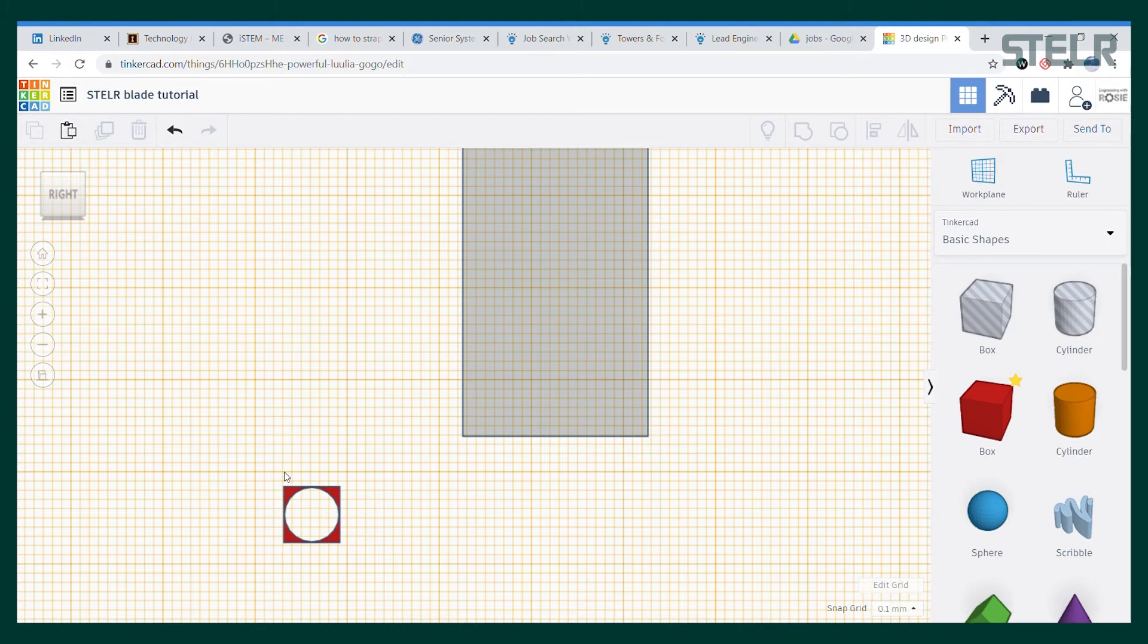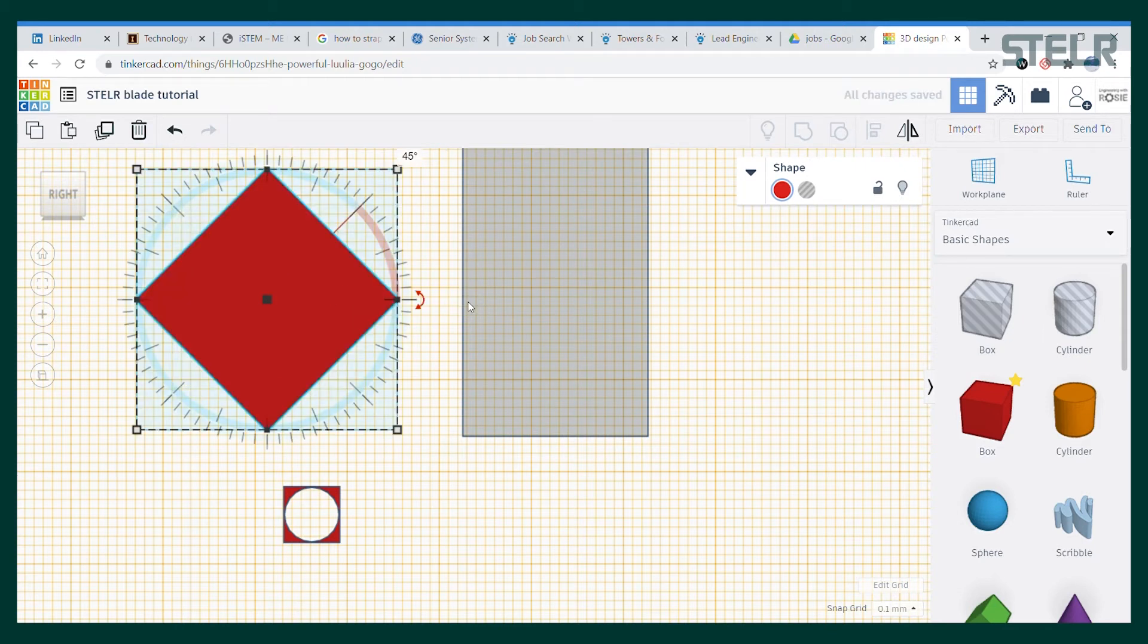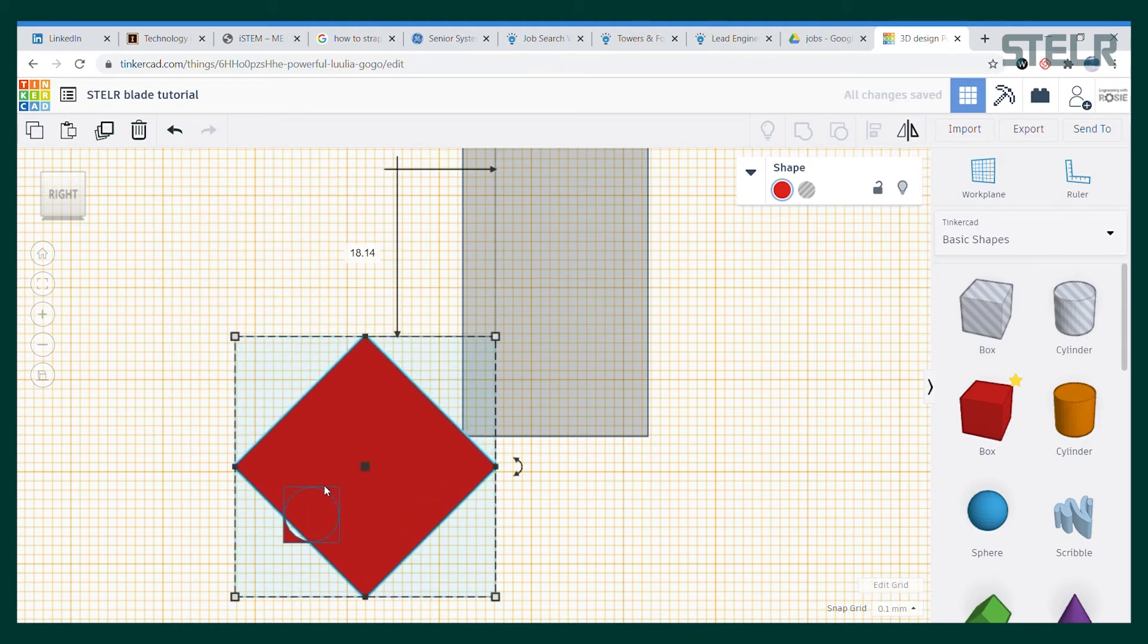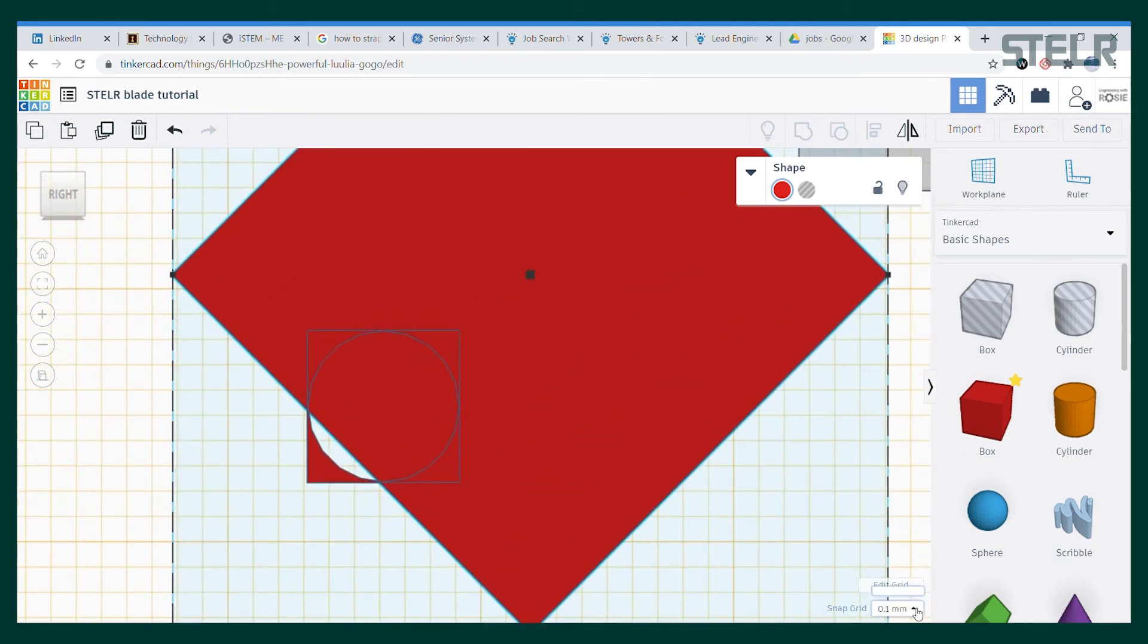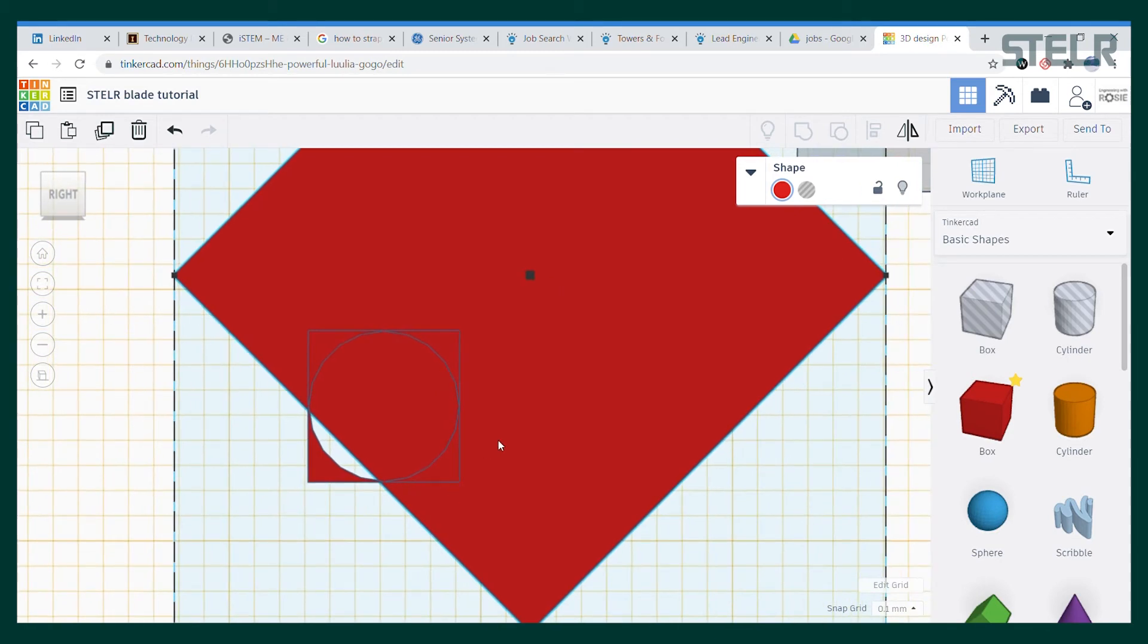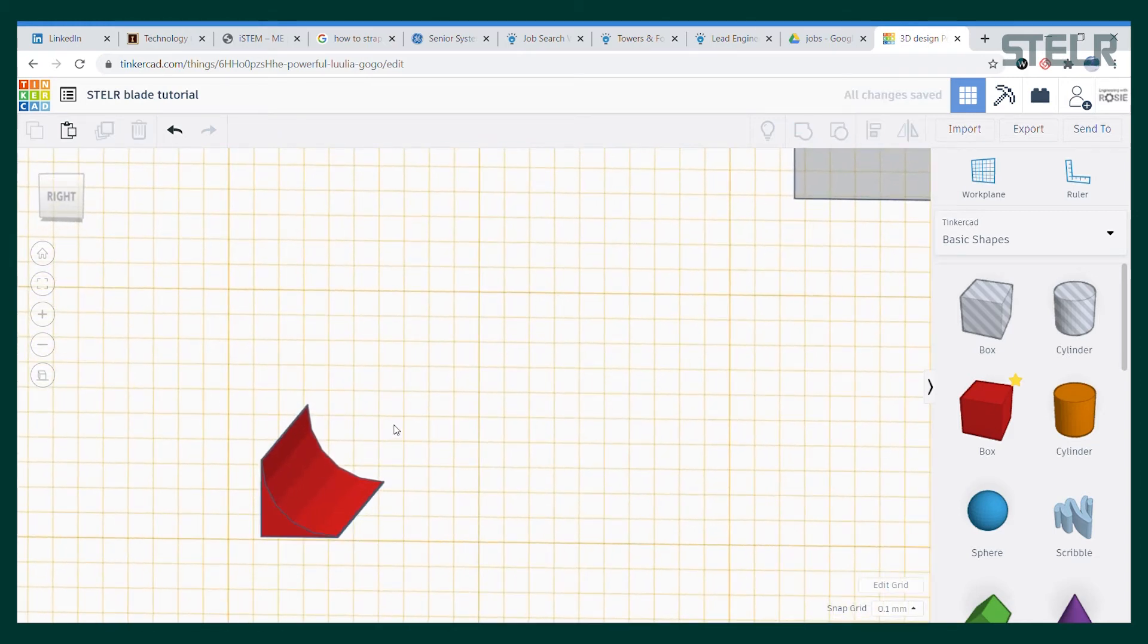Now we have the shape we need but we also have some extras that we don't need, so I'm going to make a larger block and rotate it 45 degrees and drag it to line up with the place where the edges of the circle are just touching the edges of the square. If you can't get it exactly right then you can change how big the grid is to get it in the right place. Then I'll make the big square a hole and cut off the parts that we don't need by grouping them together.